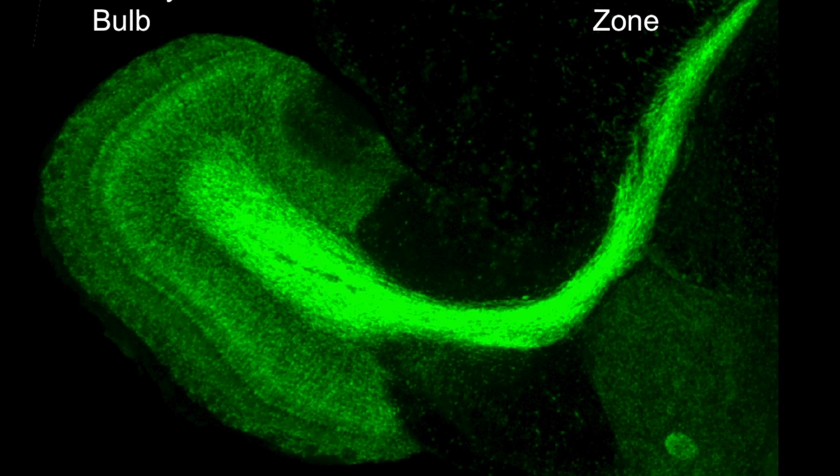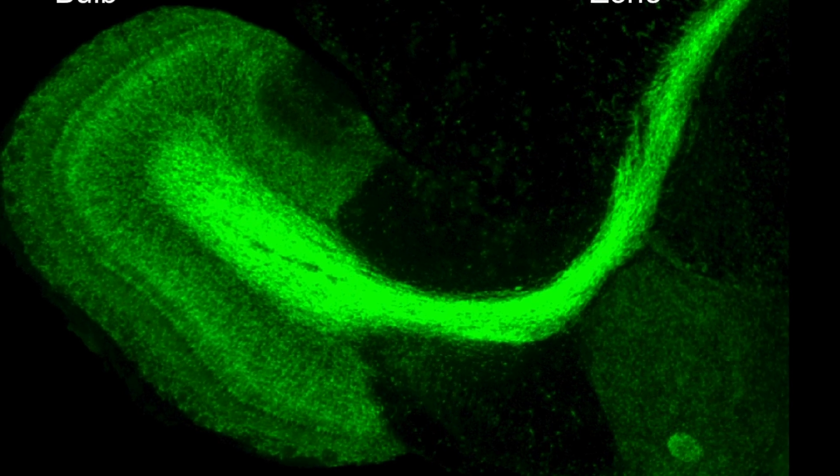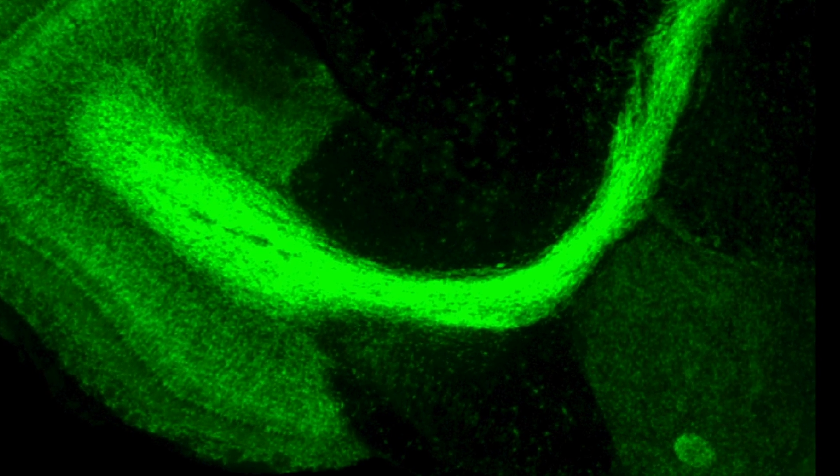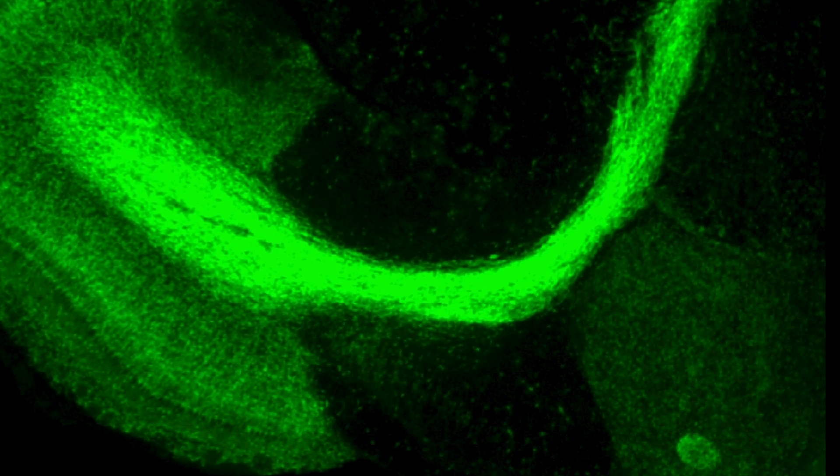And then they migrate to the olfactory bulb through the rostral migratory stream, which is basically just this long pathway that leads directly to the center of the bulb.